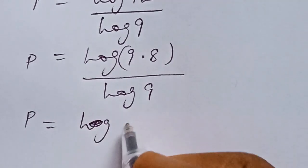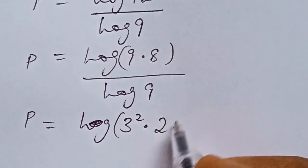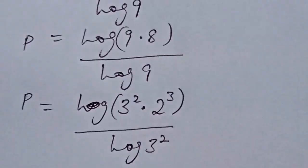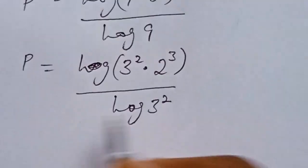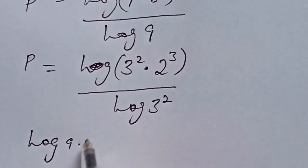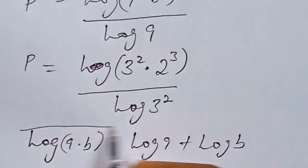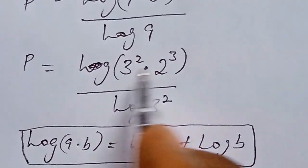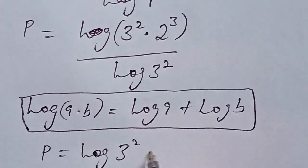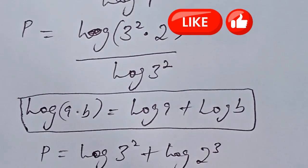So p equals log of 9 times 8 over log 9. We can write log 9 as log 3 to the power of 2, and 8 as 2 to the power of 3. Using the logarithmic rule that log(a × b) = log a + log b, we now have p equals log(3²) plus log(2³) all over log(3²).